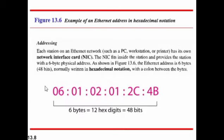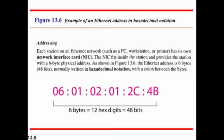This is the hexadecimal notation of Ethernet — a very important notation to remember. Each station on an Ethernet network has its own Network Interface Card (NIC), which provides the station with a 6-byte physical address, also known as a 48-bit address. The format is hexadecimal digits separated by colons, for example: 06:01:02:01:2C:4B — 6 bytes, 12 hexadecimal digits, equal to 48 bits.